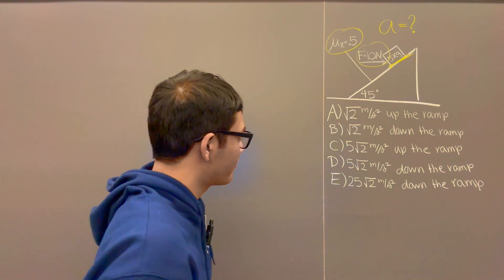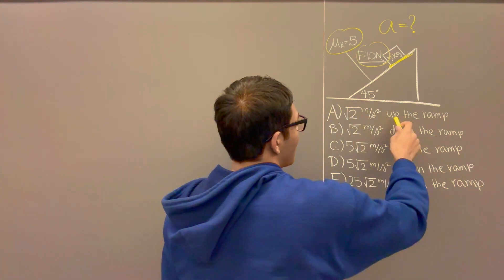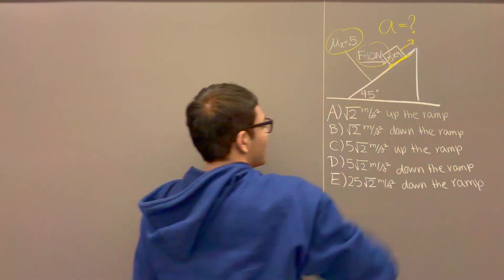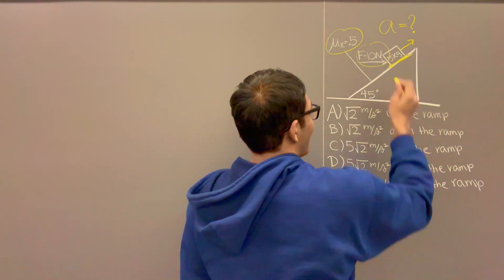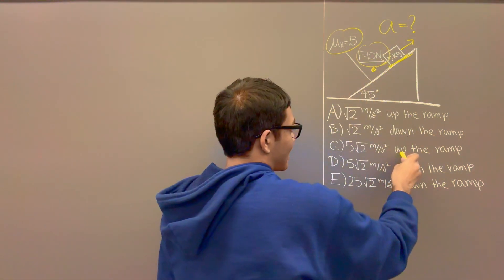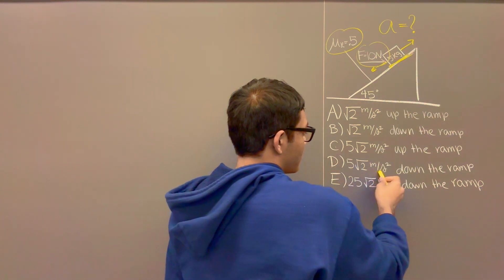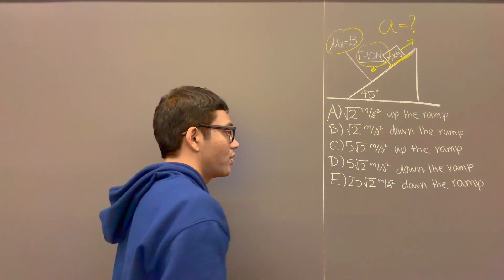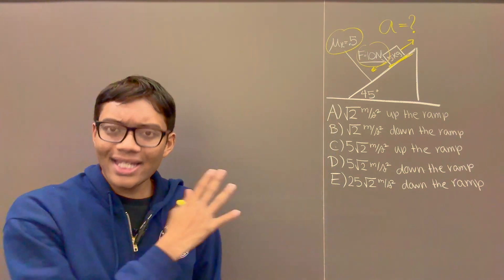Let me go through a few of the choices. √2 meters per second squared up the ramp — that would mean the block accelerates up. √2 meters per second squared down the ramp — it accelerates down. 5√2 meters per second squared up the ramp, 5√2 meters per second squared down the ramp, and 25√2 meters per second squared down the ramp. So pick a choice and try to select one of the answers.